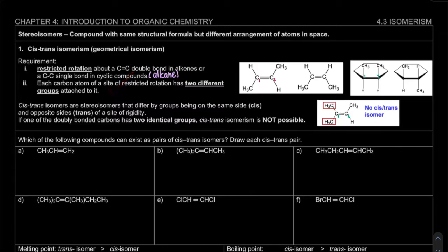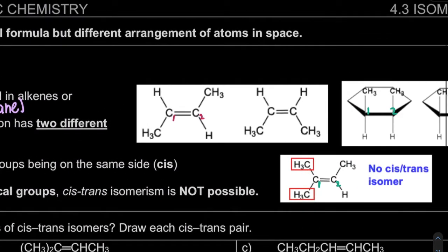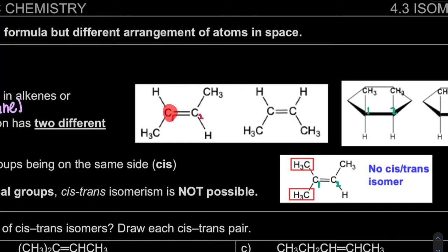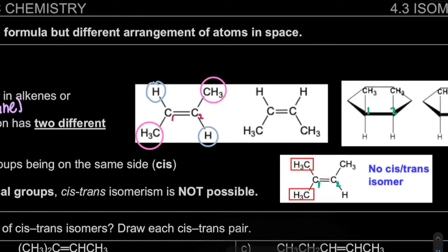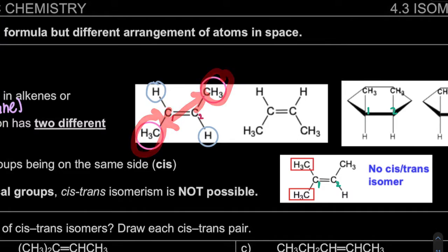Cis-trans isomers are stereoisomers that differ by groups being on the same side (cis) or opposite side (trans) of the site of rigidity. For example, when the same group — CH3 — is on the opposite side on carbon 1 and carbon 2, this is an example of a trans isomer.